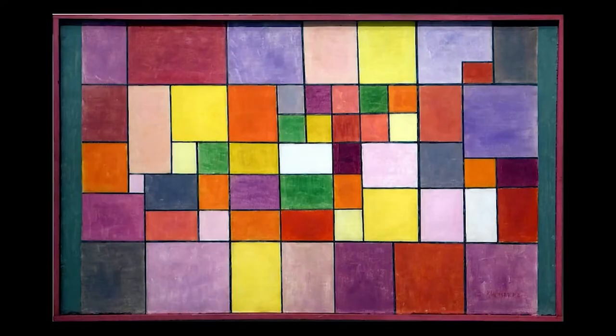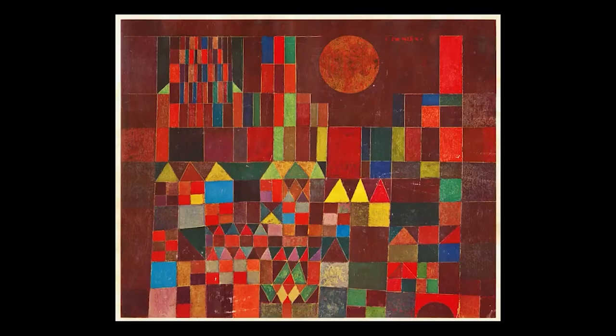These paintings also include lots of shapes that are split into smaller ones. Take a look at this square. Notice that it is broken into two triangles. In this painting, the squares, triangles, rectangles, and other shapes all come together to look like something. What is it? What does this look like? It's a castle.